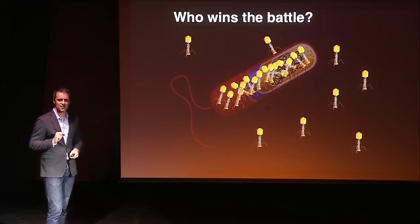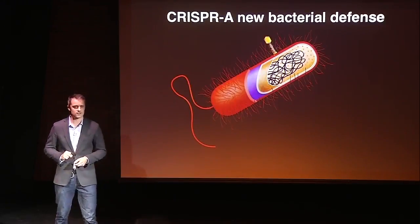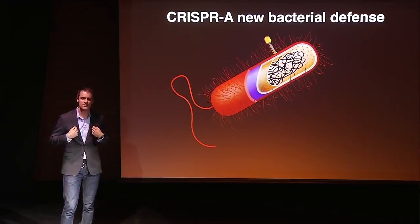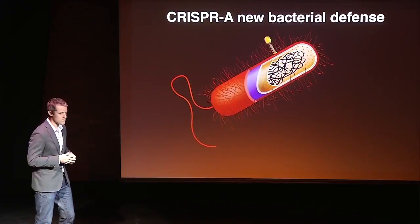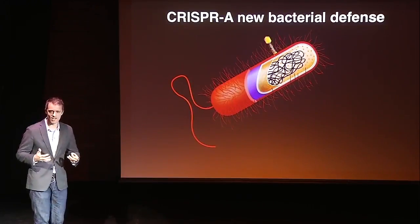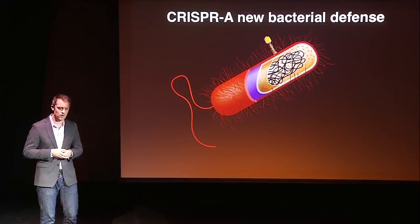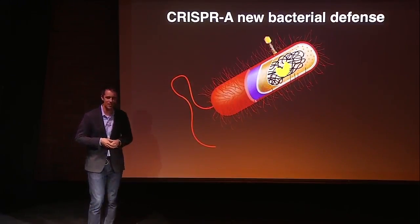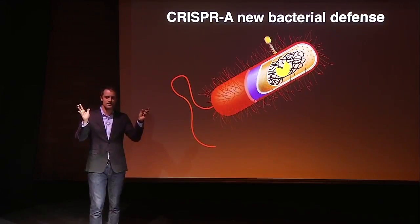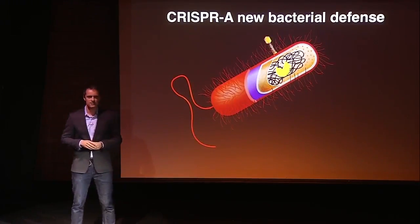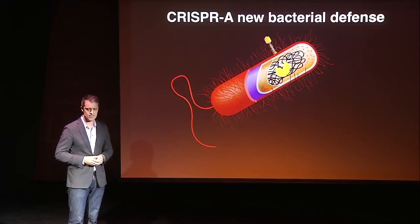CRISPR is an immune system that bacteria have against viruses. Just like we make antibodies against viruses, bacteria use CRISPR. What is CRISPR exactly? It is basically a memory — a vaccinated mugshot. The CRISPR system has seen this virus before. Like a little Pac-Man inside of the cell, it waits for the virus DNA to come through the tail of the virus and chews it up. In nature, CRISPR is programmed to kill bacterial viruses and chew up their DNA.